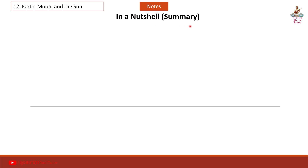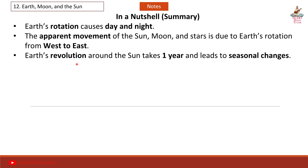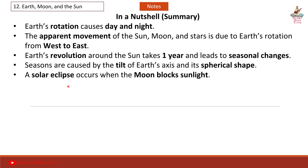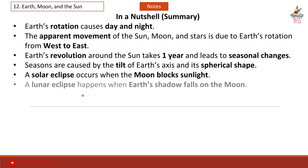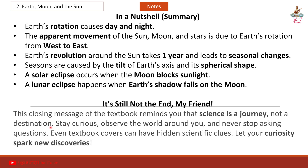In a nutshell summary: Earth's rotation causes day and night. The apparent movement of the sun, moon and stars is due to Earth's rotation from west to east. Earth's revolution around the sun takes one year and leads to seasonal changes. Seasons are caused by the tilt of Earth's axis and its spherical shape. A solar eclipse occurs when the moon blocks sunlight. A lunar eclipse happens when Earth's shadow falls on the moon. This closing message of the textbook reminds you that science is a journey, not a destination.